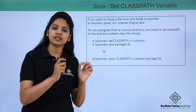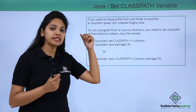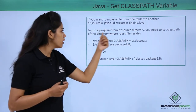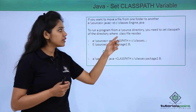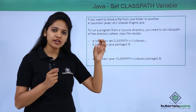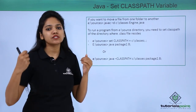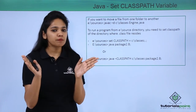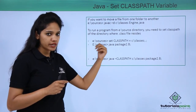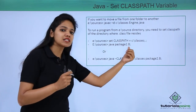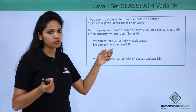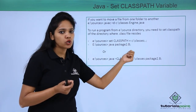If you want to execute a program located in your E drive source directory, you need to set the classpath to the C drive directory where the .class file is located. We are storing the .java file in E drive and the .class file in C drive. You navigate to the E drive sources folder, then use 'set classpath' pointing to the C drive location. Finally, you write 'java' followed by the file name — for example, 'java packageD' — to execute the program.